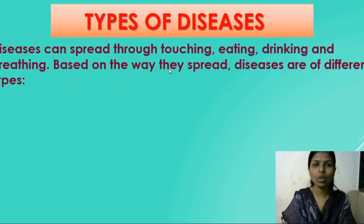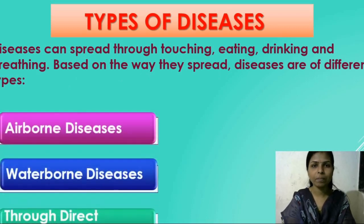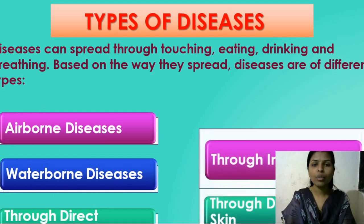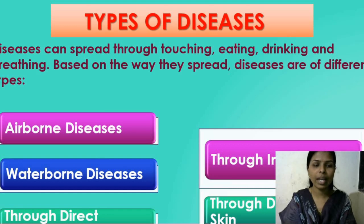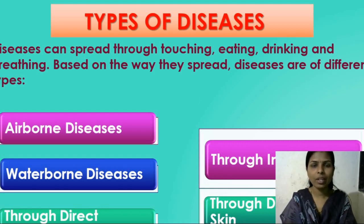Now let's see the different types of diseases based on the way they spread — through touching, eating, drinking, and breathing. The first is Airborne Diseases — diseases that spread through the air. Second, Waterborne Diseases — diseases that spread through water. Third, through Direct Contact — diseases that spread through touching. Fourth, through Insects — diseases that spread through insects. And the fifth is through Damaged Skin — caused due to some allergies from food or air.